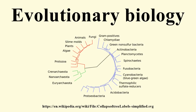An evolutionary approach is also key to much current research in biology that does not set out to study evolution per se, especially in organismal biology and ecology. For example, evolutionary thinking is key to life history theory. Annotation of genes and their function relies heavily on comparative, i.e., evolutionary, approaches. The field of EvoDevo investigates how developmental processes work by using the comparative method to determine how they evolved.